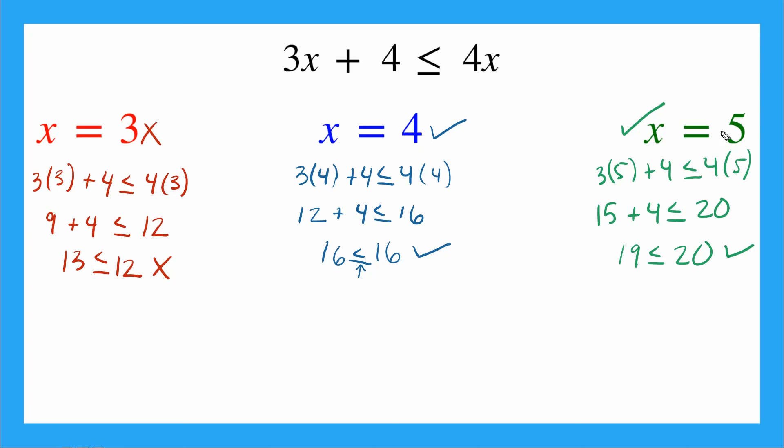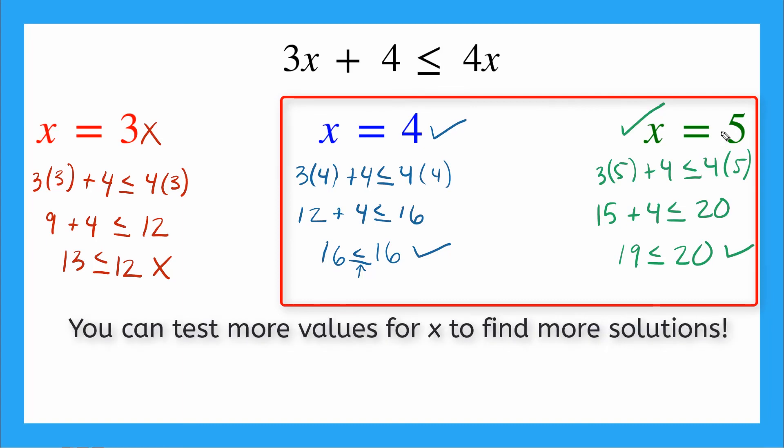So how many solutions did we find here? Yeah, we found two solutions or two values of x that make our inequality true. Does that mean there are only two solutions to this inequality? No, it actually doesn't. It just means that out of the three possible solutions that we decided to test, two of them make our inequality true. But there are actually many, many more. If you want, you can keep trying more numbers to see if you can find any other solutions.